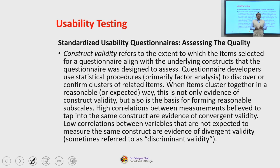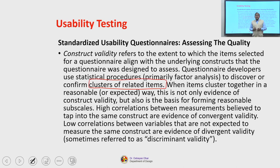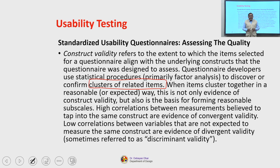The third one is construct validity, which refers to the extent to which the items selected for a questionnaire align with the underlying constructs that the questionnaire was designed to assess. Questionnaire developers use statistical procedures like factor analysis to discover or confirm these clusters of related items. When items cluster together in a reasonable or expected way, this is not only evidence of construct validity but also the basis for forming reasonable sub-scales.